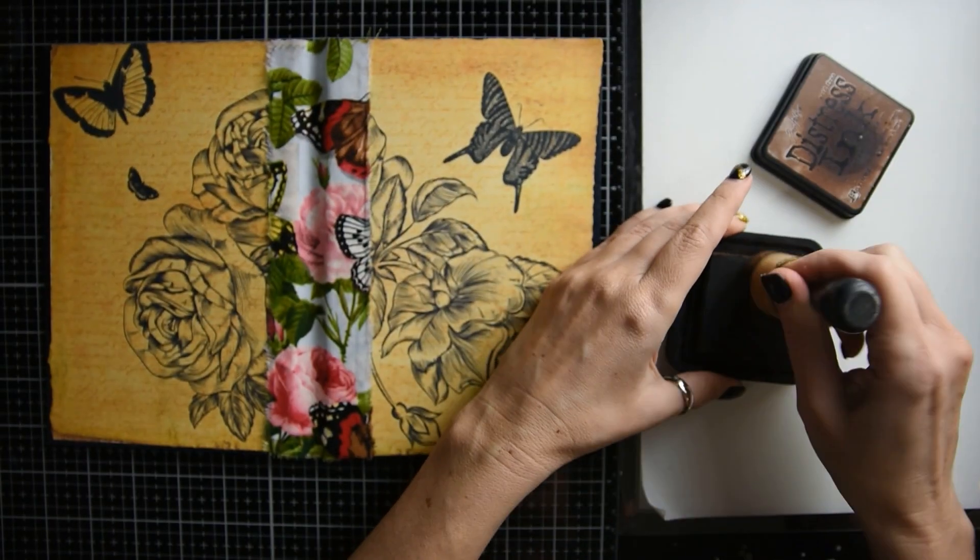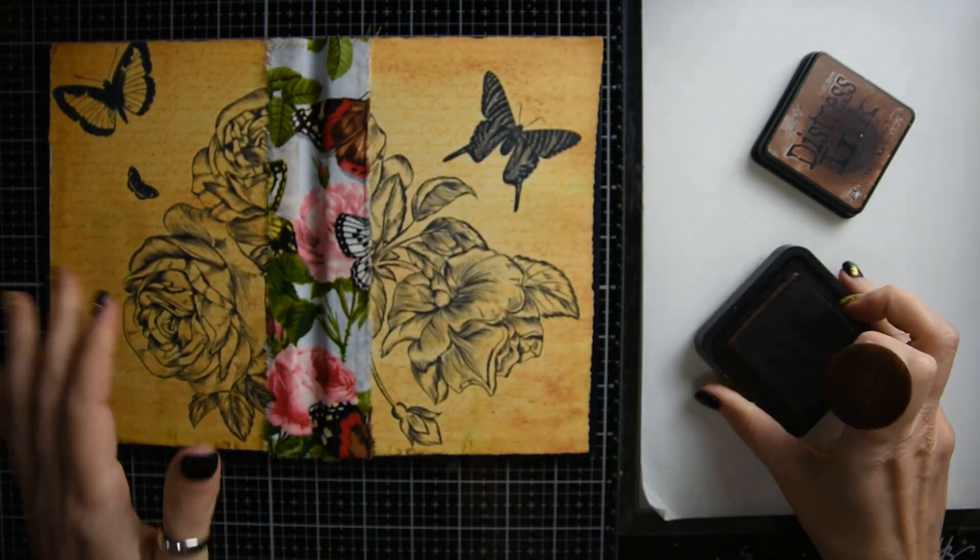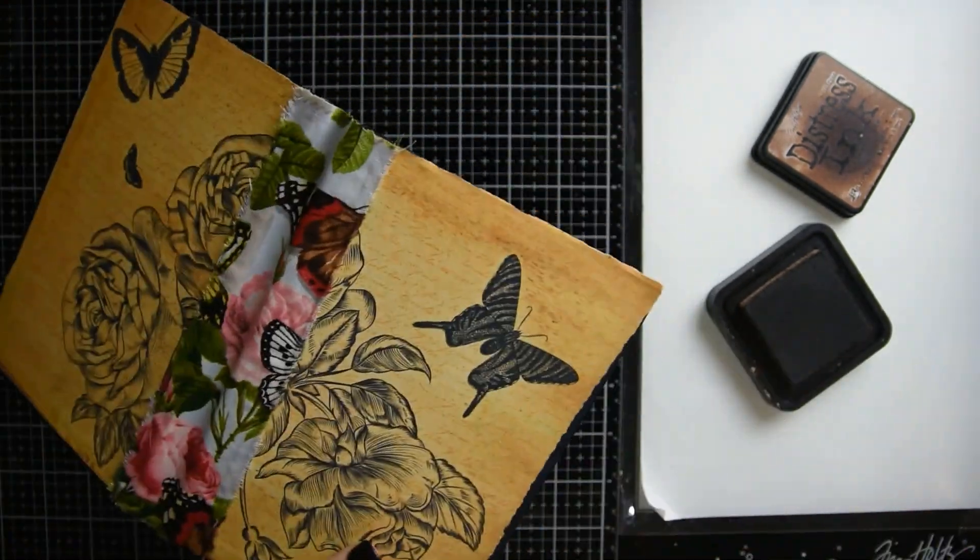So the next step is to just ink around the edges and I'm using vintage photo to do this.